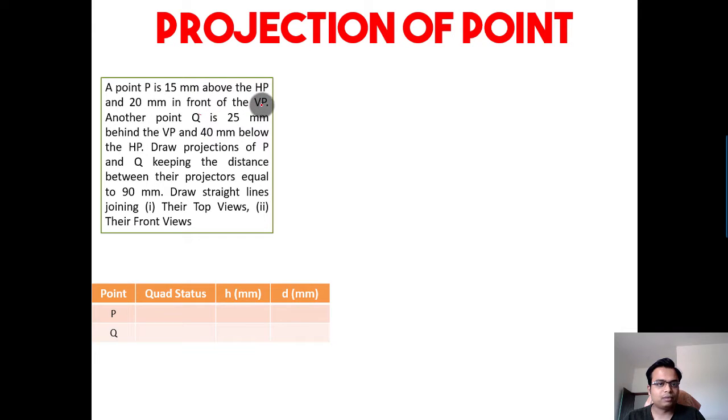On reading this further, it's clearly stating that it is in front of the VP. That means it's a clear-cut case of a point being situated in the first quadrant. Point P is in the first quadrant, 15 mm above the HP—value of H is 15—and 20 mm in front of VP. This has got to be 20.